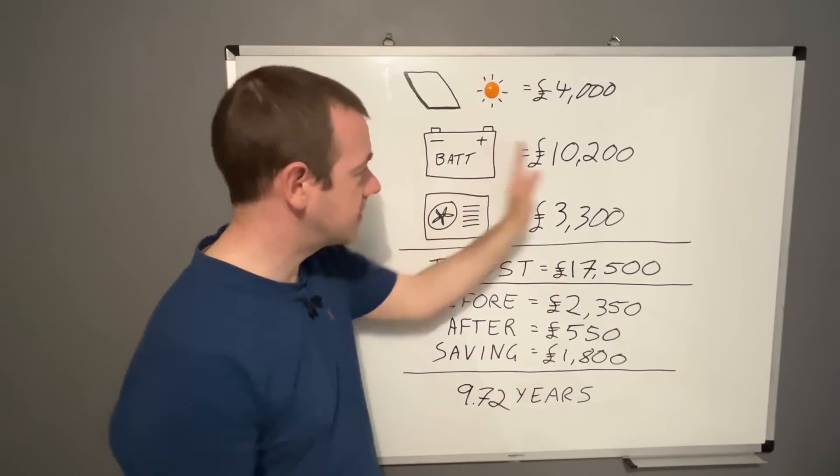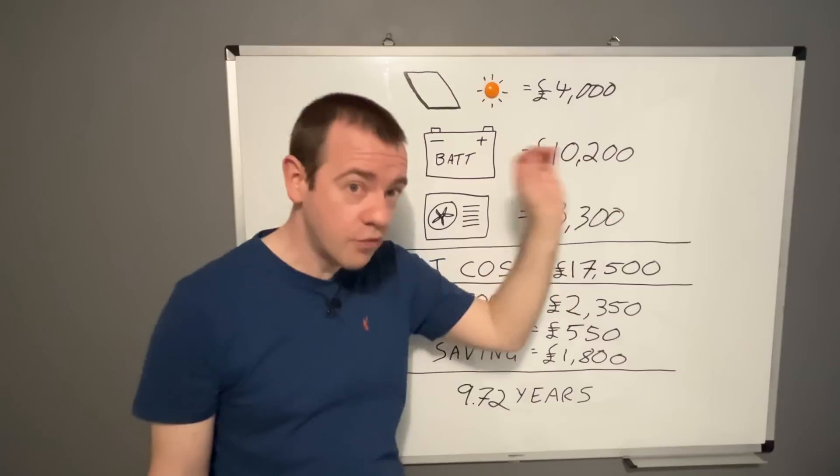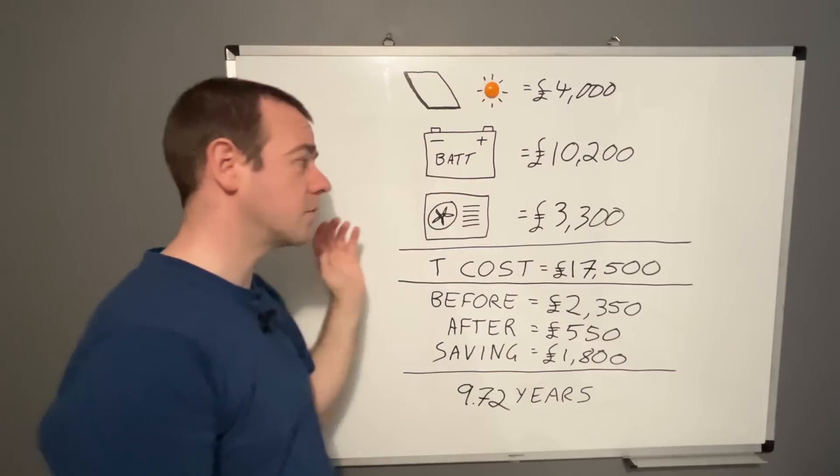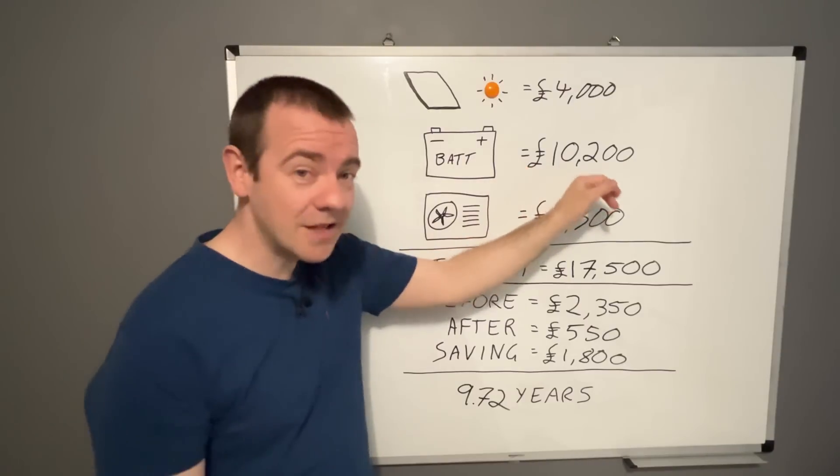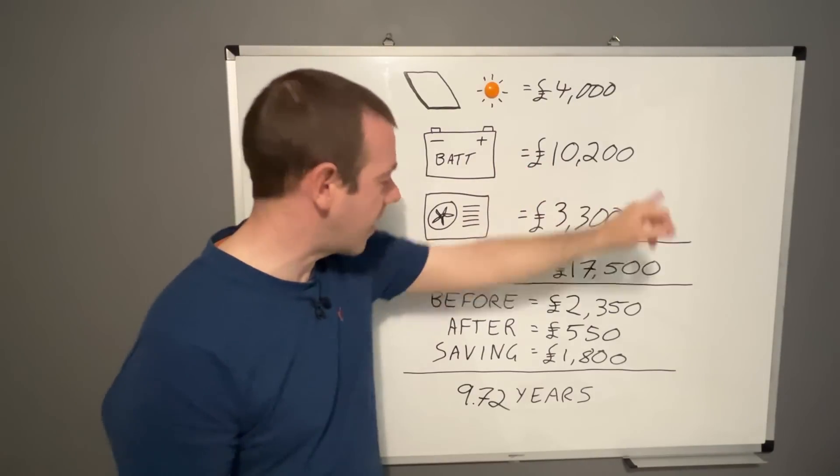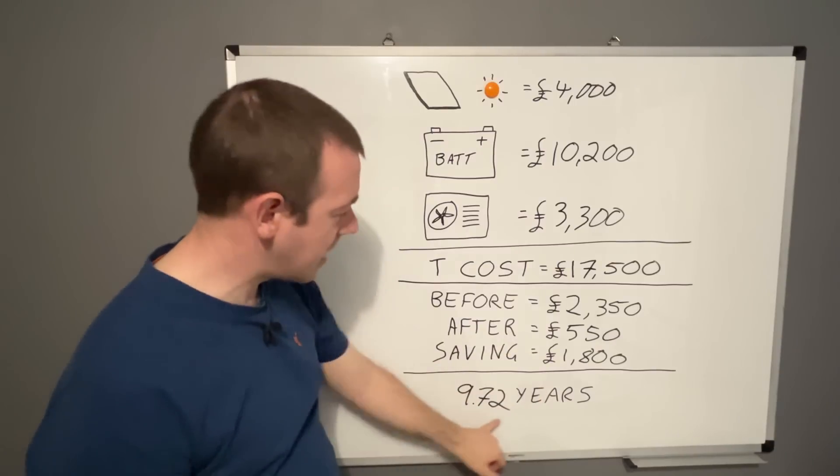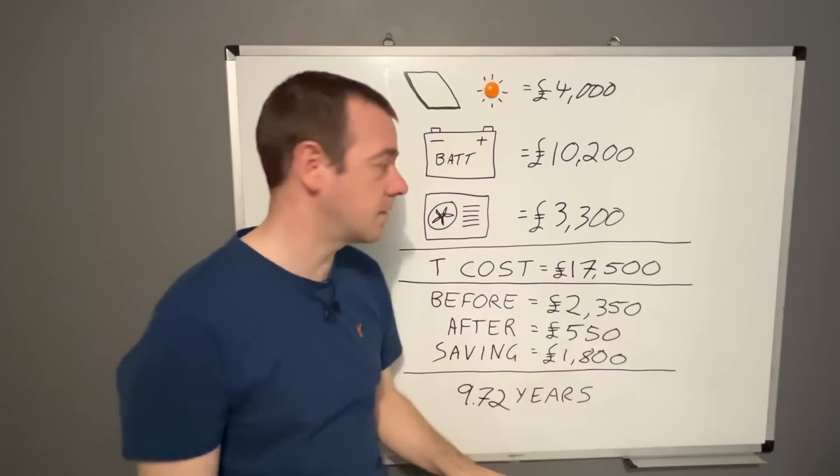So that's, you know, long warranty. That's what I would call a more premium battery system compared to the one I've just mentioned. But you can do this cheaper. So if you knock five grand off that, this payback period suddenly becomes a lot more palatable.